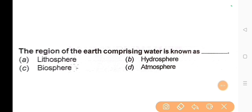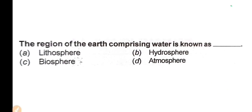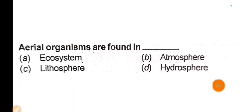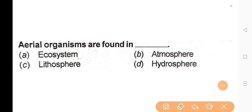Next question: The region of the earth comprising water is known as? The correct answer is Option B: Hydrosphere. Next question: Aerial organisms are found in? The correct answer is Option B: Atmosphere.